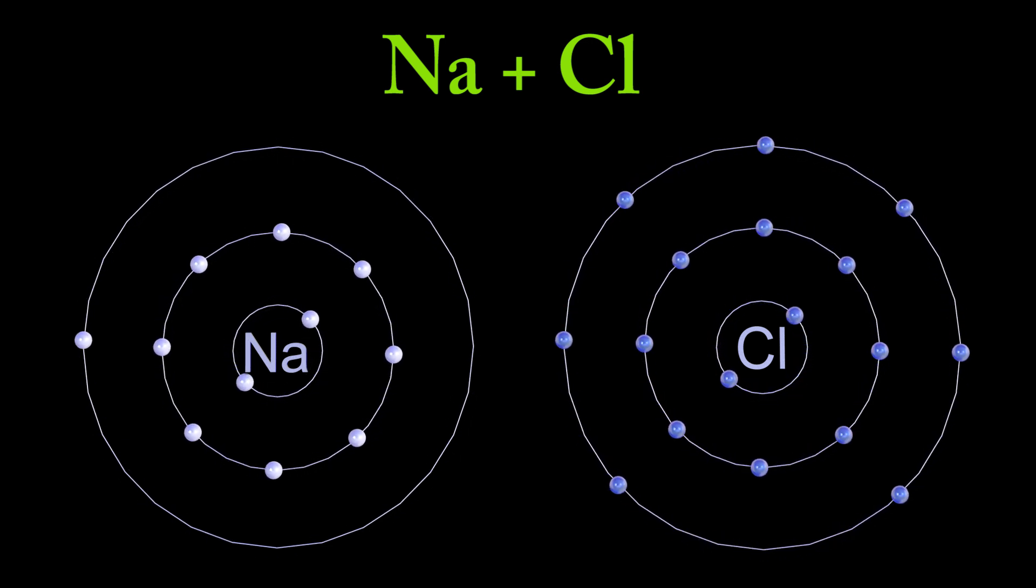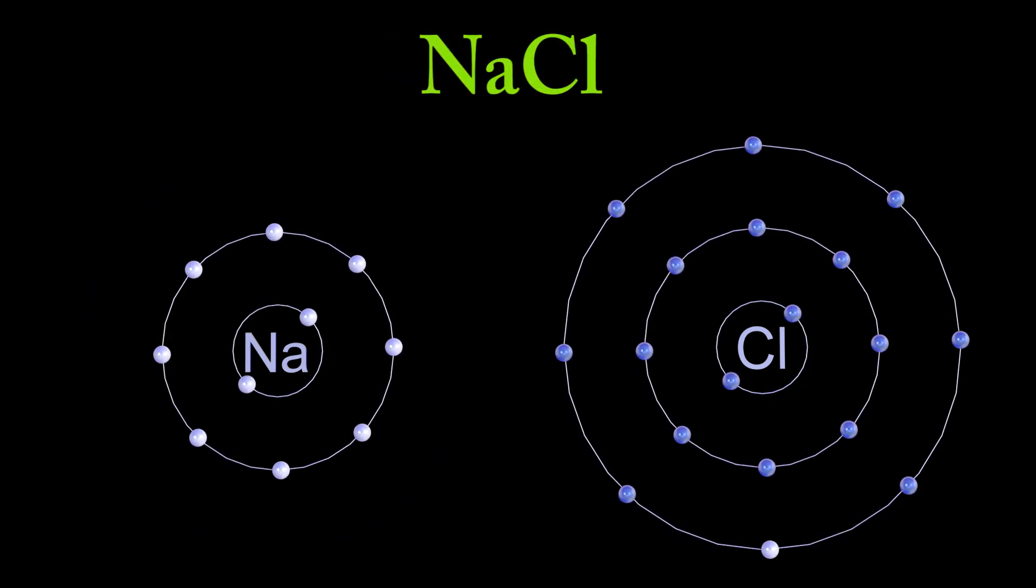So this is where we see ionic bonding appearing. In order to achieve stability, sodium will donate one of its electrons to chlorine so that both atoms will become stable. So remembering that electrons are negatively charged, as the sodium loses that electron, it loses that negative charge, meaning that sodium becomes more positive.